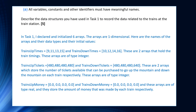Here's a possible solution to part A in blue. In task 1, I declared and initialized 6 arrays. The arrays are one-dimensional. Here are the names of the arrays, their data types, and their initial values. We have trains_uptimes initialized to the values 9, 11, 13, and 15. And trains_downtimes initialized to 10, 12, 14, and 16. These two arrays hold the train times.